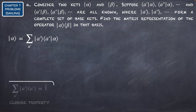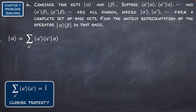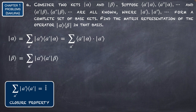First, let's consider this arbitrary ket alpha. Including the identity on this ket, we get these coefficients multiplying the eigenket a-prime in this summation. The same applies for beta: beta is the identity multiplied by beta, and we understand this as the coefficients multiplying the eigenkets.